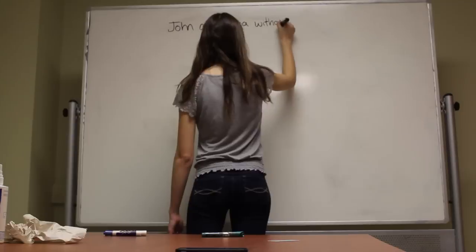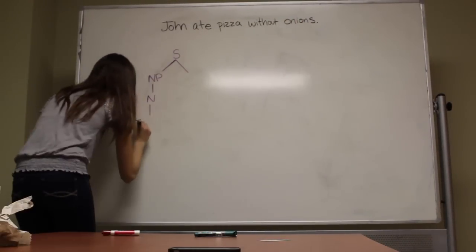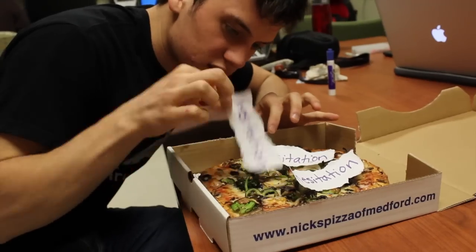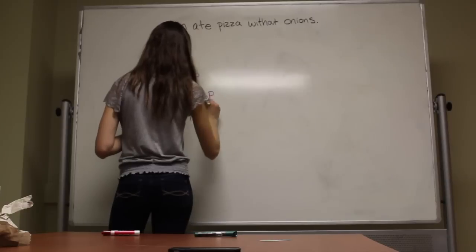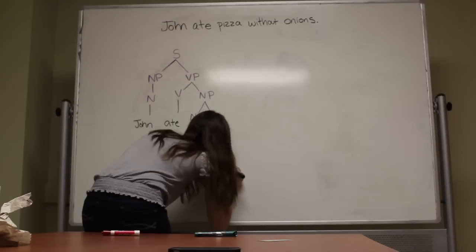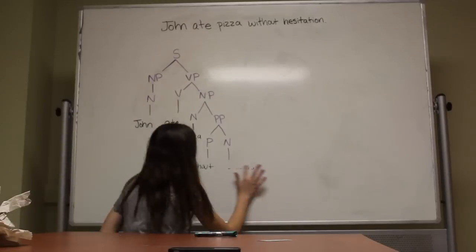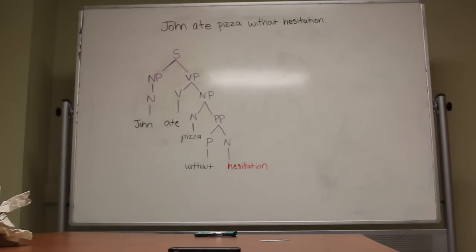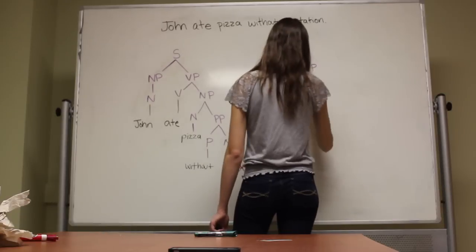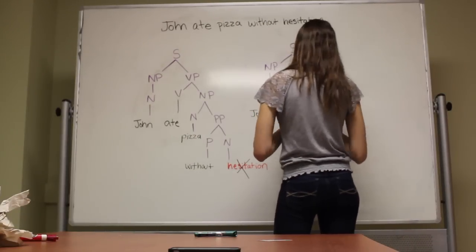Probabilistic computations attempt to correct for ambiguous sentences and factor semantic meaning into syntactic parses. For example, "John ate pizza without onions" and "John ate pizza without hesitation" could be classified under the same syntactic tree, but the second one wouldn't make any sense under the first tree. Instead, we can factor in probabilities to different combinations of non-terminal tokens. Two key constraints: all probabilities of a non-terminal token should sum to one, and all probabilities should be non-negative.